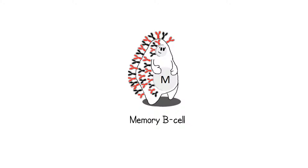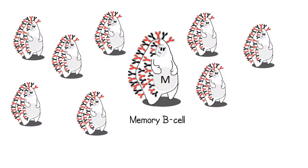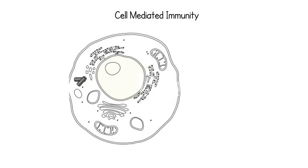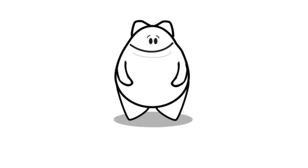This allows for the process of proliferation to occur and a faster secondary response. In instances where antigens are able to enter cells of the body, it triggers cell-mediated immunity to occur. Macrophages which move throughout the body are able to identify antigens and present them to T cells. T cells are commonly found within the cortex of lymph nodes.